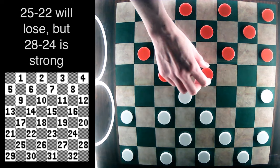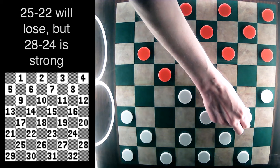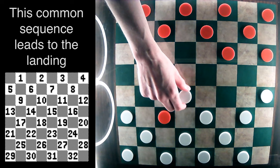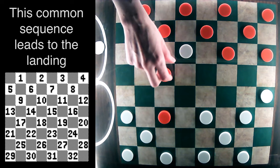Playing the cover up with 25-22 is no good after 15-19. So the best way to respond to 10-15 is to play 28-24.